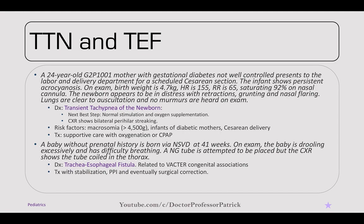A baby born via normal spontaneous vaginal delivery at 41 weeks is drooling excessively and has difficulty breathing. An NG tube is attempted but the chest x-ray shows the tube coiled within the thorax. This is a tracheoesophageal fistula, or TEF, related to the VACTERL congenital associations. Treatment is stabilization and PPI, and it will eventually need surgical correction.